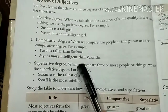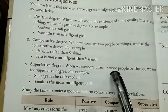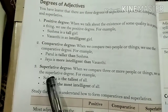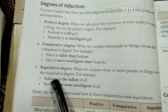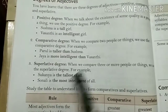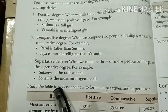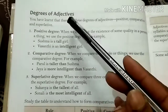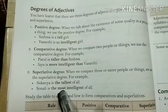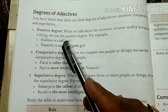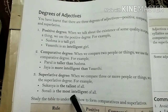Superlative degree: when we compare three or more people or things, we use the superlative degree. For example, 'Sukanya is the tallest of all' — among more than two, Sukanya is the tallest. 'Sonali is the most intelligent of all.' So positive degree has no comparison, comparative degree compares two nouns, and superlative degree compares more than two nouns.